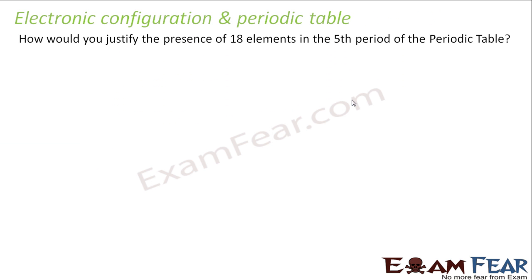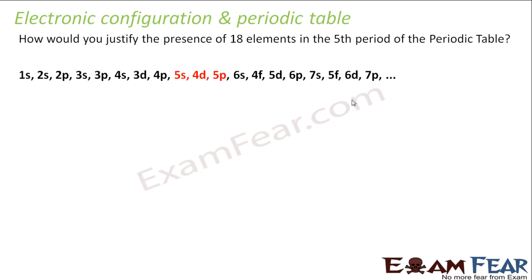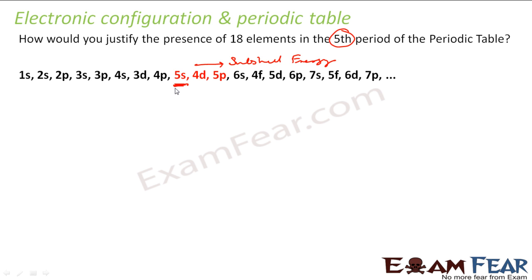Let us take an example: how do you justify the presence of 18 elements in the 5th period? Using the order of filling of sub-shells, the 5th period starts the first time we get an electron with n = 5. So from here, my 5th period starts. The moment I get the first element filling a sub-shell with n = 5, the maximum value of n becomes 5 and my 5th period starts.